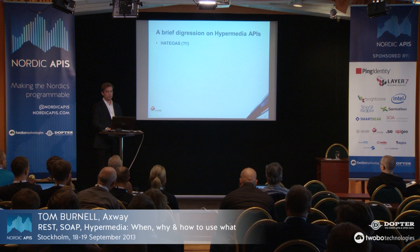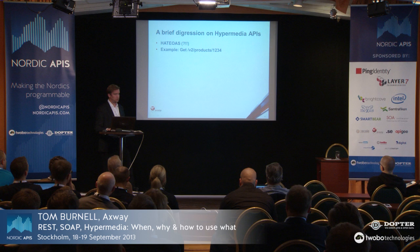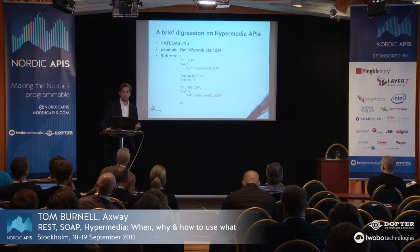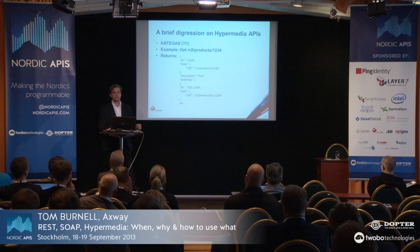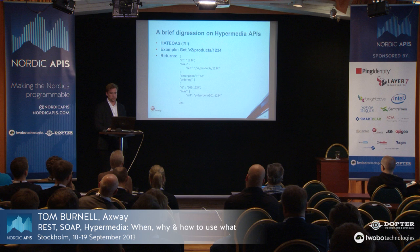So when I do a GET on a product in a company's catalogue API, it could return information on the product along with links describing what can be done with that product. In this case, we've been given a link to order the product via the API. And if the product wasn't available to order, that link shouldn't be served out by the API, and the client should know not to display the order link to the user. In this example, 501 is my customer number, hence it being part of the API call.